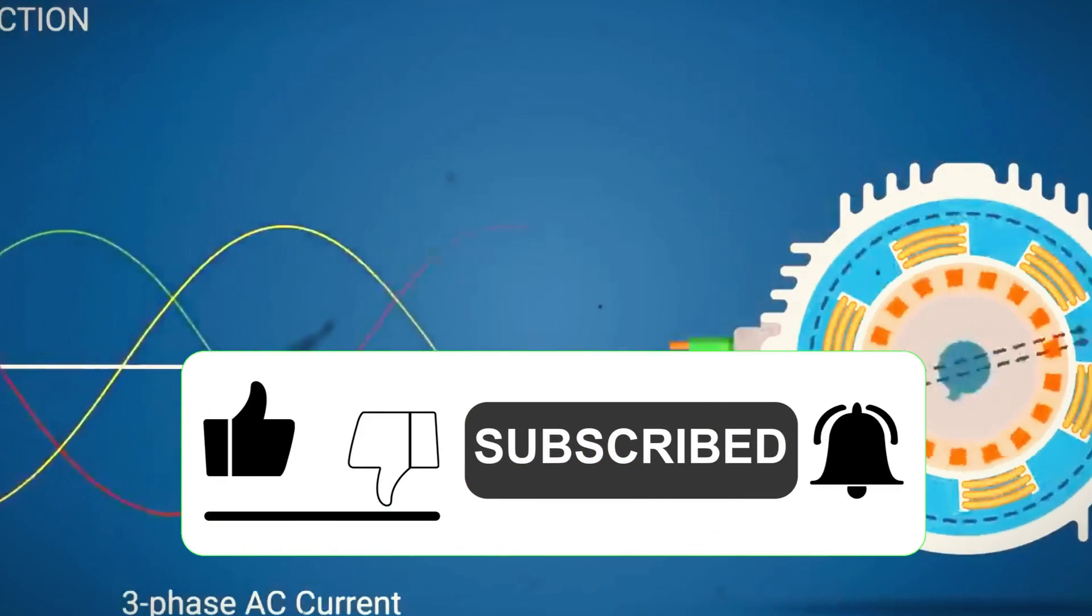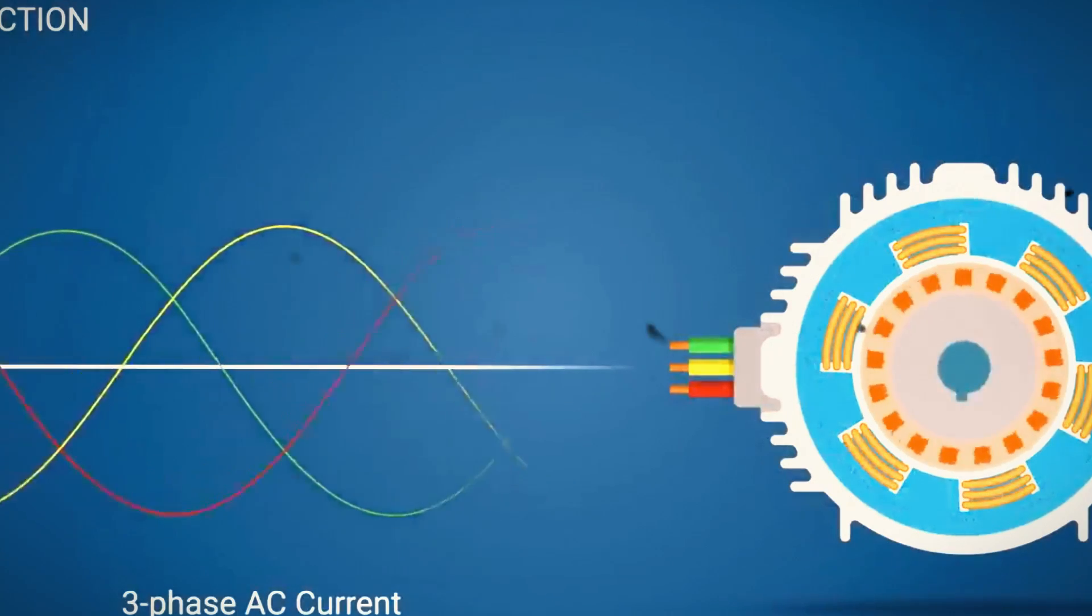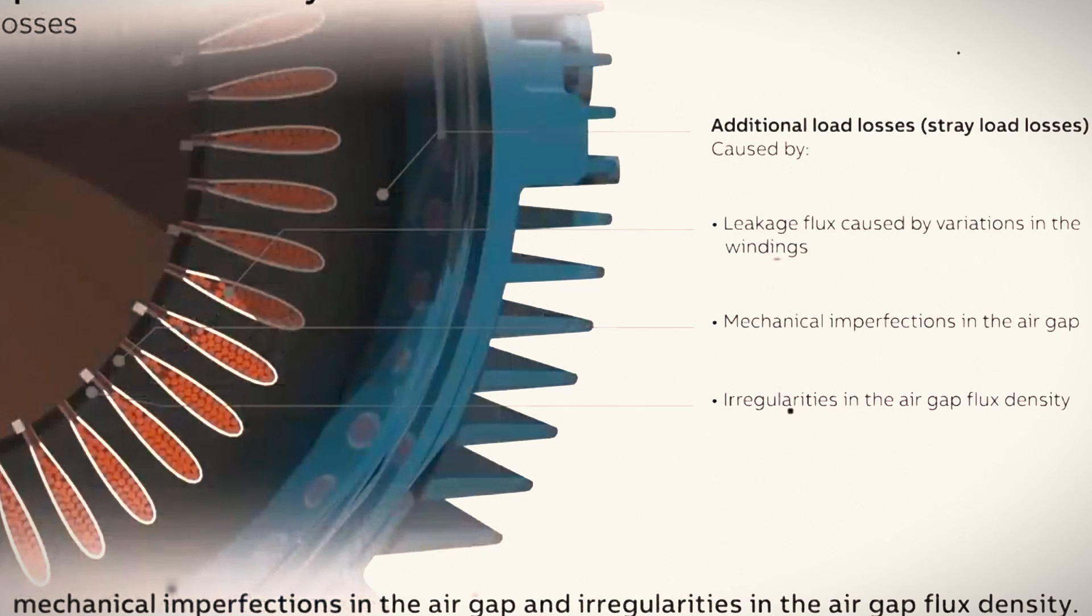However, traditionally, electric motors are made up of a few key parts: the stator, which is fixed, and the rotor, which spins. These parts create magnetic fields that drive the motor.